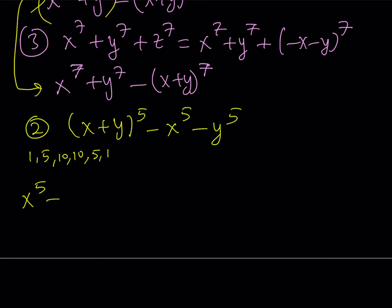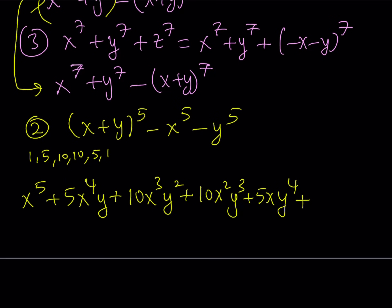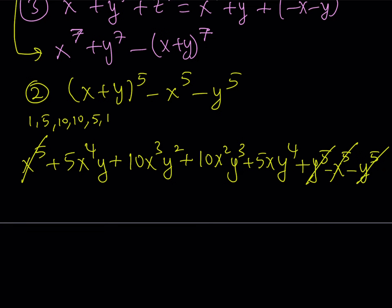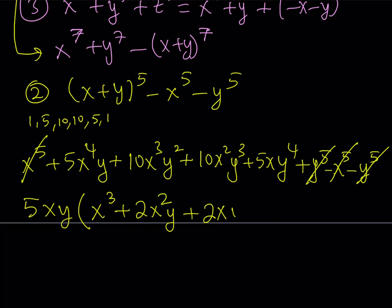Expanding gives: x to the fifth plus 5x to the fourth y plus 10x cubed y squared plus 10x squared y cubed plus 5xy to the fourth plus y to the fifth. Then I subtract x to the fifth and y to the fifth. Those terms cancel out. The remaining terms share a common factor of 5xy, so factoring that out gives: 5xy times the quantity x cubed plus 2x squared y plus 2xy squared plus y cubed.